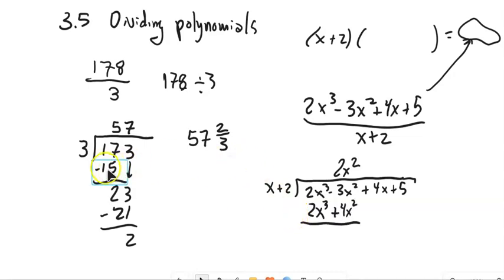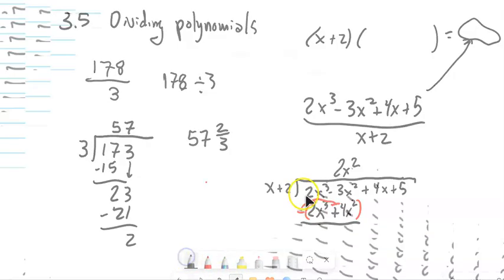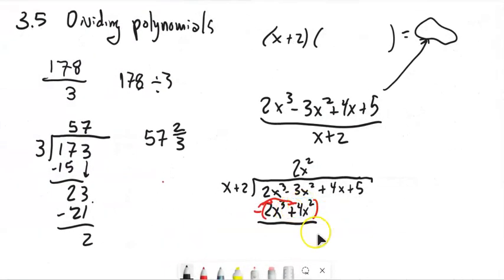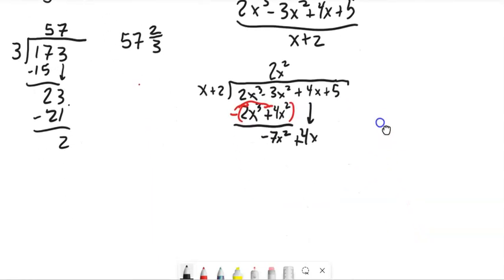And now just like over here, I had this 3 times 5 is 15, and I'm subtracting. I'm going to subtract over here. So now I'm going to subtract this whole thing. So that negative gets distributed to both of those pieces, right? 2x cubed minus 2x cubed is 0, and negative 3x squared minus 4x squared is a negative 7x squared. Bring on the next term, the 4x. Just like over here, right? We had 2, and then we brought down the 3. Give myself a little space here.